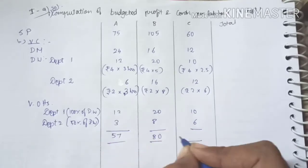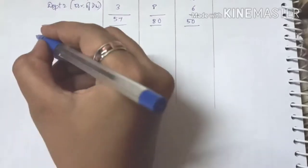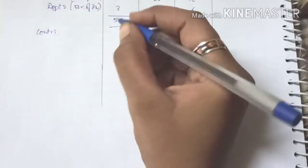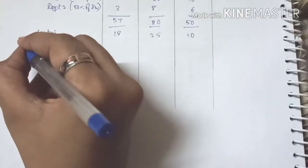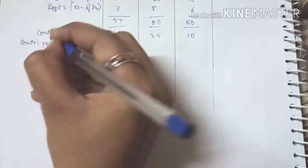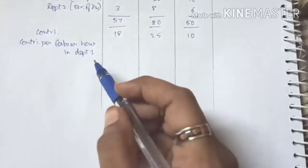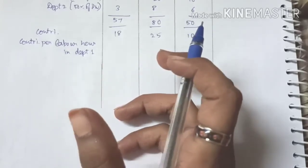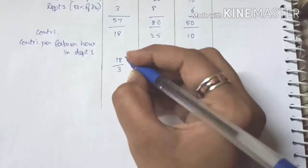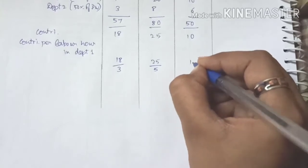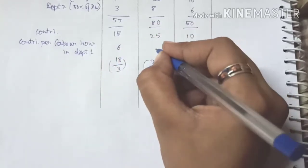Adding up the variable costs gives 57, 80 and 50. Subtracting from selling price gives contribution of 18, 25 and 10. Contribution per labor hour in department 1: we consider only department 1 since that is where the shortage exists. A = 18 ÷ 3 hours, B = 25 ÷ 5 hours, C = 10 ÷ 2.5 hours, giving Rs 6, Rs 5 and Rs 4 respectively.